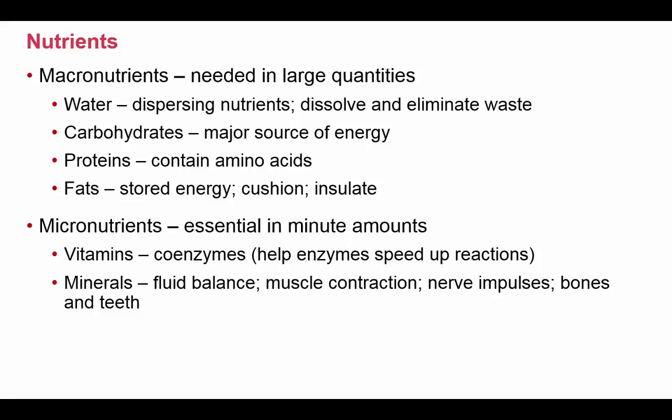In the previous unit, we talked about these macronutrients: water being important for dispersing nutrients, dissolving, and eliminating waste; carbohydrates as major sources of immediate energy; proteins containing amino acids used in many chemical reactions; and fats for long-term energy storage, cushioning, and insulating the body. The micronutrients — vitamins — most of the time play the role of coenzymes, helping our enzymes speed up reactions. Minerals are there for fluid balance, muscle contraction, nerve impulses, bones, and teeth.